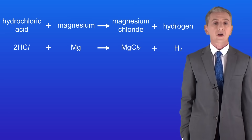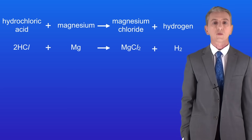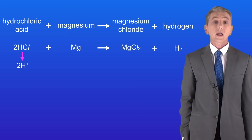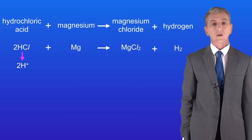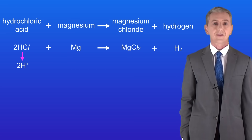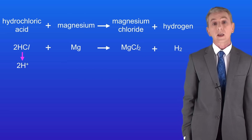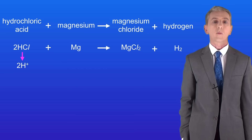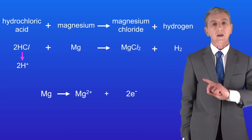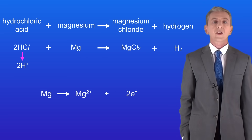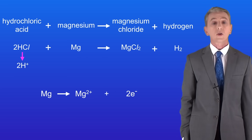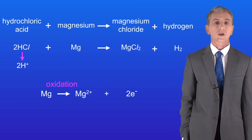So the question is what's actually happening here? Well, the hydrochloric acid releases H+ in aqueous solution, as shown here. Now we're looking at the reaction of acids with metals in terms of oxidation and reduction. When magnesium atoms react, they lose two electrons and they form the magnesium ion Mg²+. Because the magnesium atoms are losing electrons, this is an example of an oxidation reaction — the magnesium atoms are being oxidised.